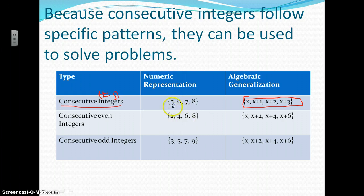For example, 5, 6, 7, 8 — those are consecutive; they are in order.